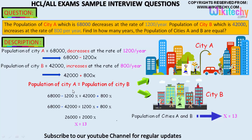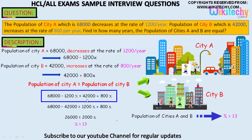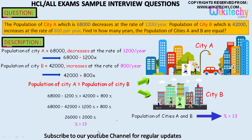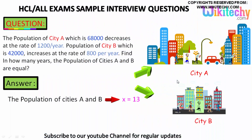Setting the populations equal: 68,000 − 1,200X = 42,000 + 800X. Moving terms: the plus becomes minus and the minus becomes plus, giving 26,000 = 2,000X. Therefore X = 13. In 13 years, both cities will have the same population. The answer is X = 13.